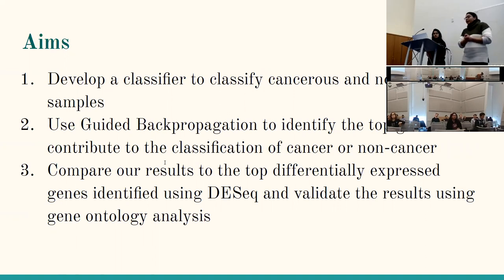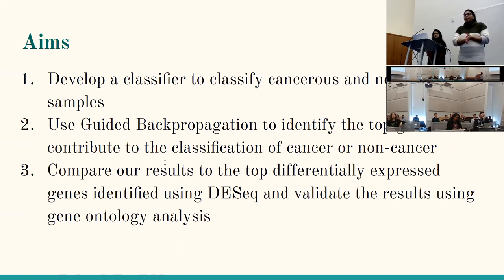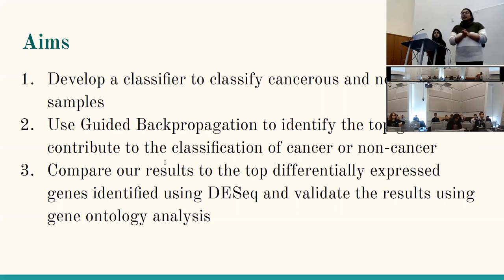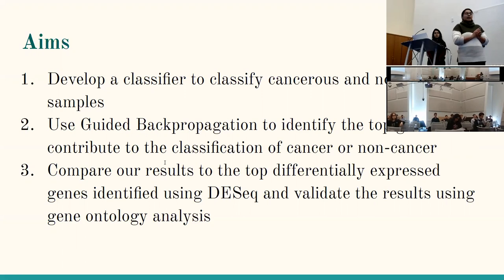Our major aims were to first develop a classifier that could classify normal and cancerous tissue. Then use guided back propagation to identify the top genes that contribute to that classification. Lastly, to test our results, we wanted to compare to the top differentially expressed genes identified by DESeq2, and then validate those results from our back propagation and DESeq2 using gene ontology analysis.